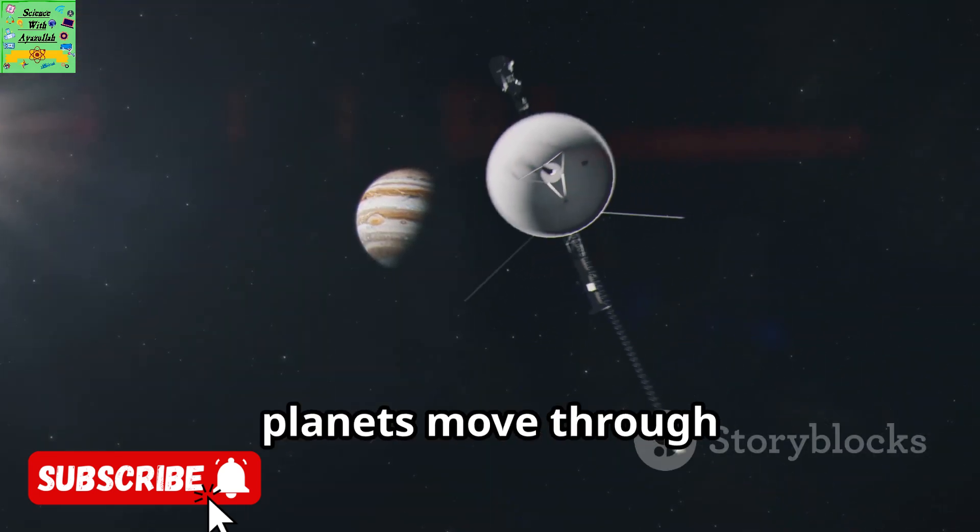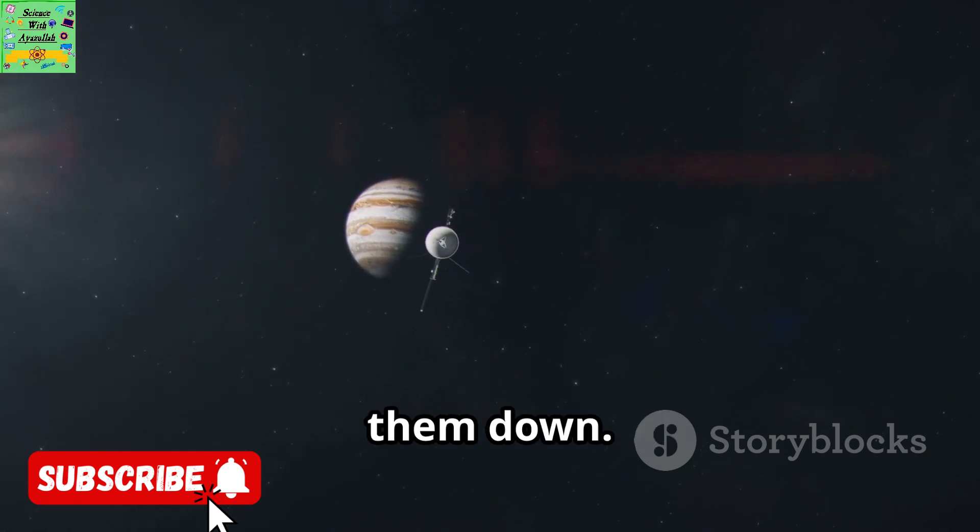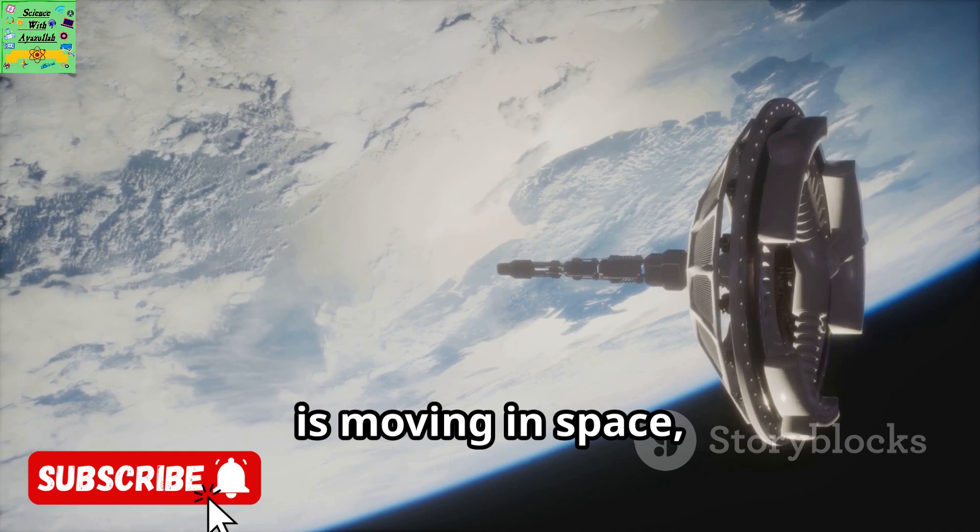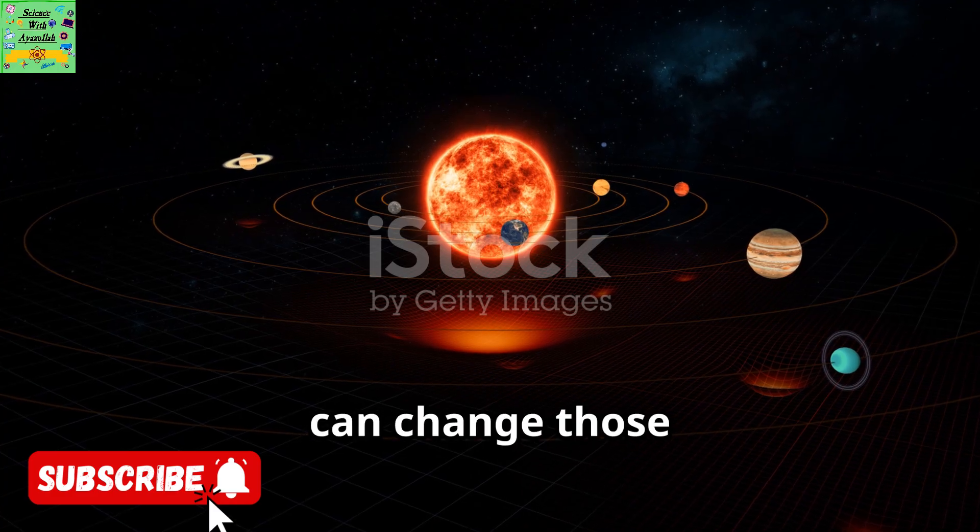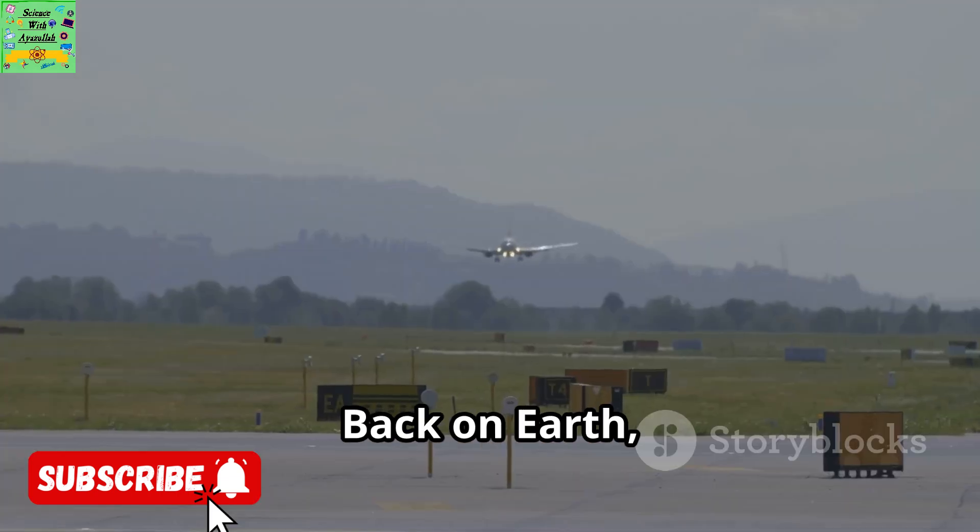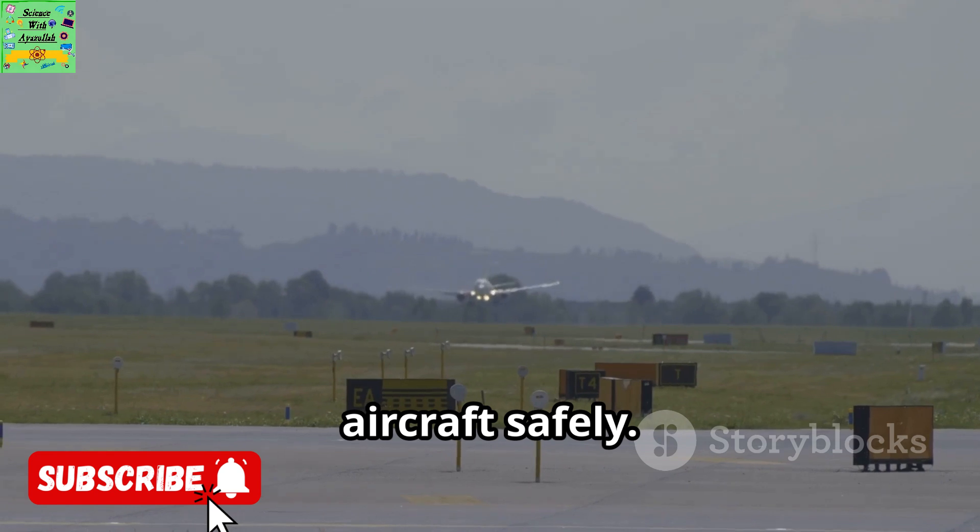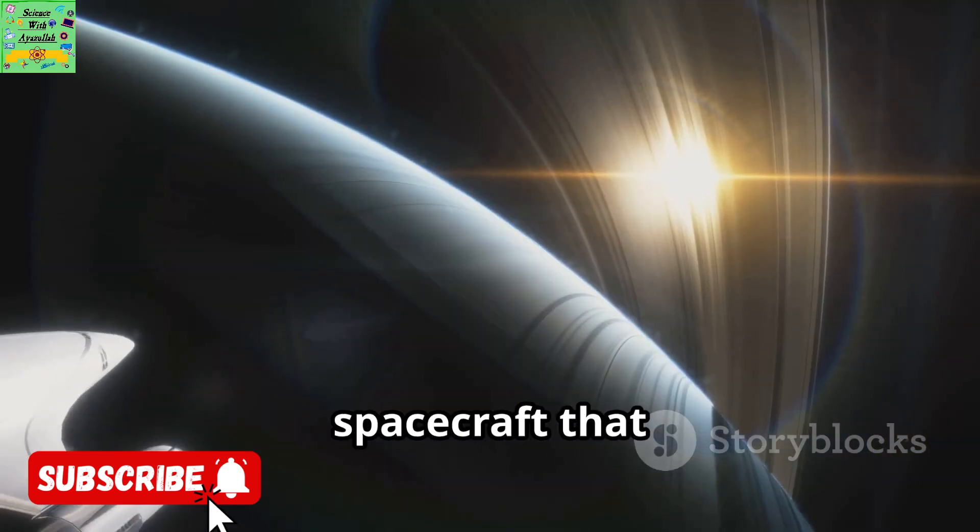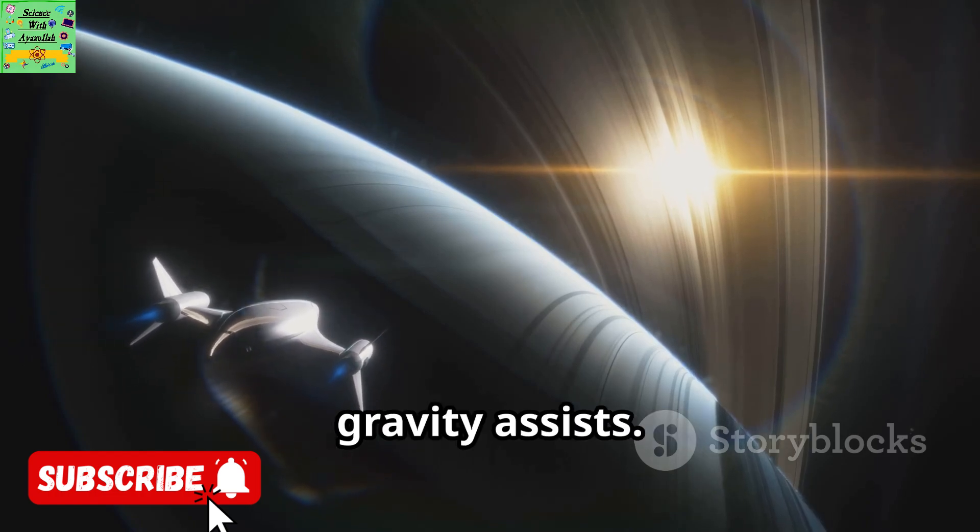Earth and the other planets move through this vacuum too, with no air resistance to slow them down. So once something is moving in space, it keeps going unless a force acts on it. The main force that can change those motions is gravity. Back on Earth, pilots deliberately use air resistance to slow down aircraft safely. Compare that to a spacecraft that cannot use air to brake. It relies on engines or planetary gravity assists.